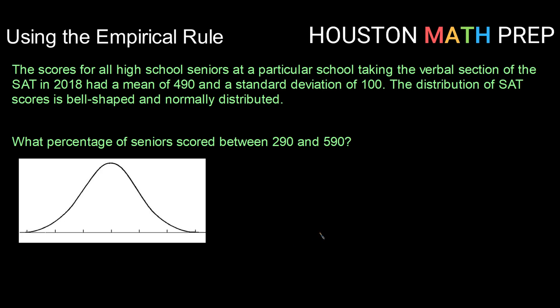Hey guys, welcome back. Houston Math Prep here. We're going to look at some more examples using the empirical rule, or the 68-95-99.7 rule, as some of us call it.